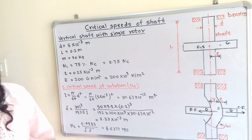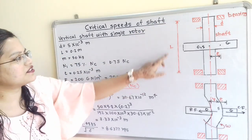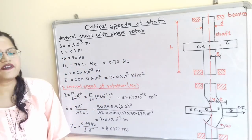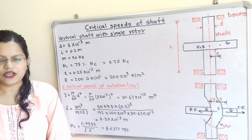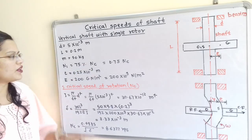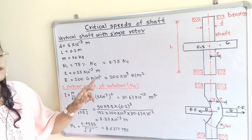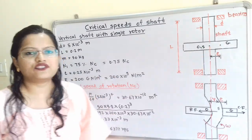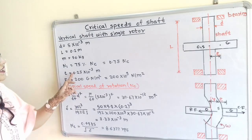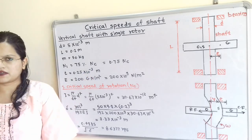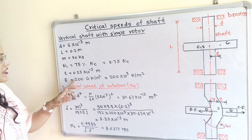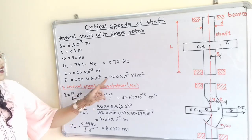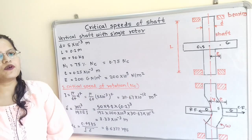Given data: Diameter of shaft D = 5 × 10⁻³ m. Length of shaft L = 0.2 m. Mass of rotor M = 50 kg. The shaft rotates at 75% of critical speed Nc, so N1 = 0.75 Nc. Eccentricity E = 0.25 × 10⁻³ m. Modulus of elasticity = 200 × 10⁹ N/m².